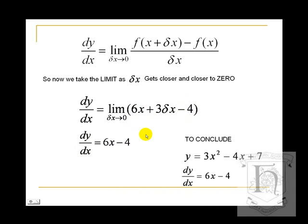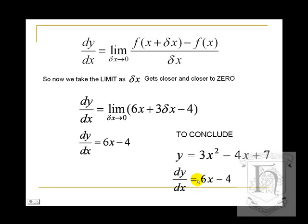To conclude: our original function y was equal to 3x squared minus 4x plus 7, and by the process of first principles differentiation we have shown that dy/dx is equal to 6x minus 4.